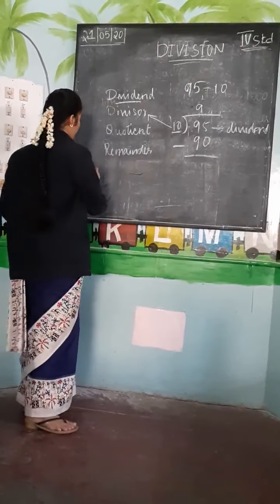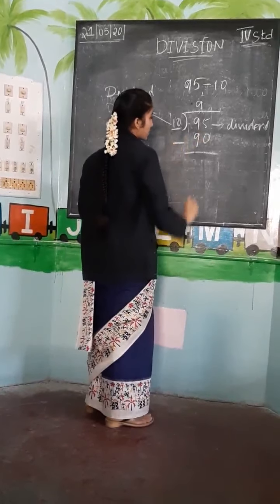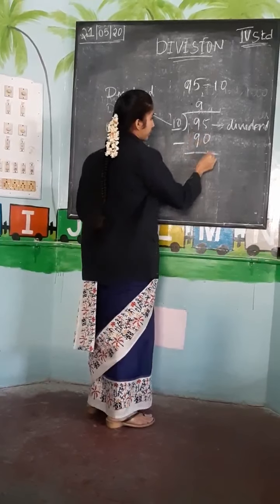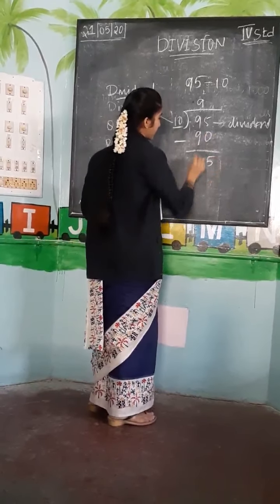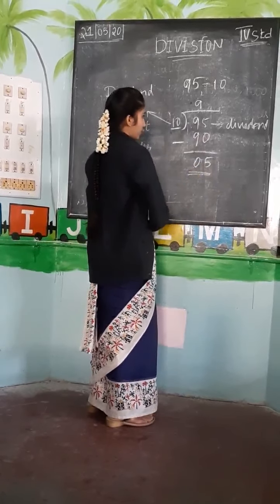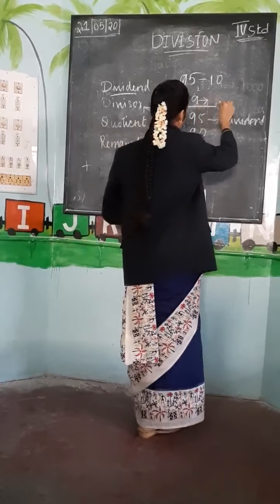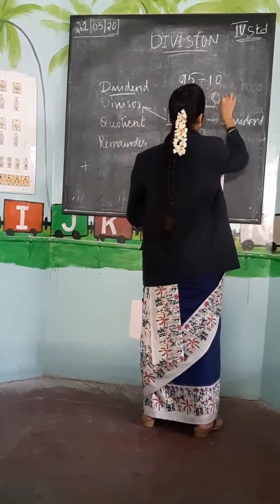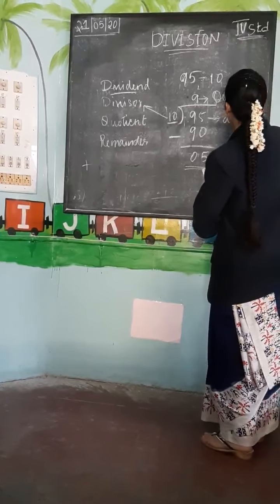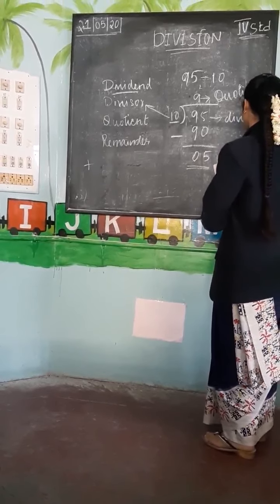Now subtract this. In multiplication you added; in division you subtract. 95 minus 90 — 95 minus 90 is 5. Wait — 95 minus 95 is 0. This is the coefficient, and this is the remainder.